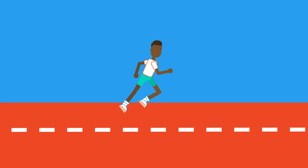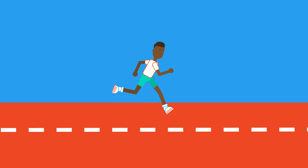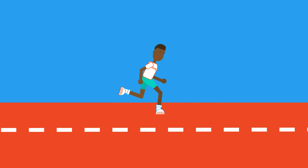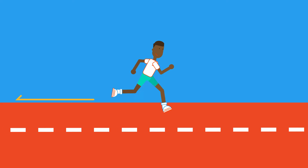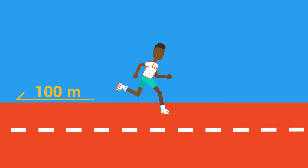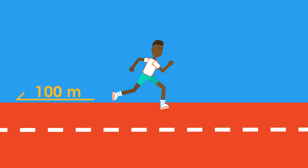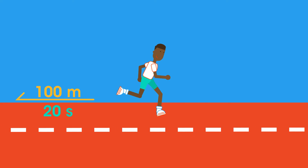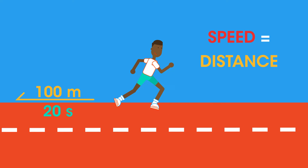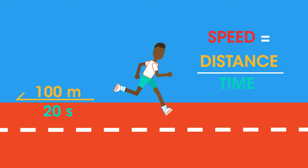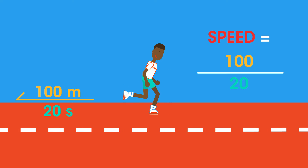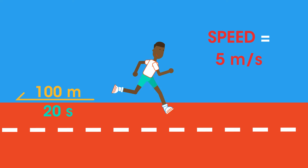Take a look at this person running a race. You might already know that we can calculate his speed by dividing the distance the man has traveled — say 100 meters — by the time it's taken him, let's say 20 seconds. So his speed equals distance divided by time, which is 100 divided by 20, or 5 meters per second.